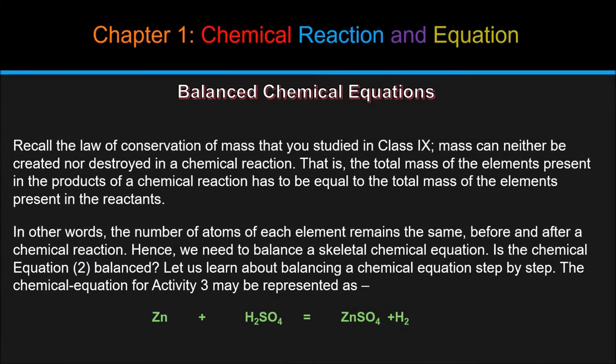What is balanced chemical equations? Recall the law of conservation of mass that you studied in class 9. Mass can neither be created nor destroyed in a chemical reaction. That is, the total mass of the elements present in the products of a chemical reaction has to be equal to the total mass of the elements present in the reactants. In other words, the number of atoms of each element remains the same before and after a chemical reaction. Hence, we need to balance a skeletal chemical equation. Is the chemical equation too balanced? Let us learn about balancing a chemical equation step by step.